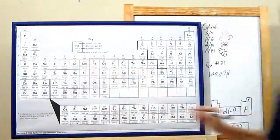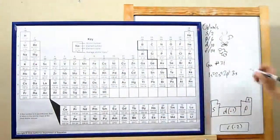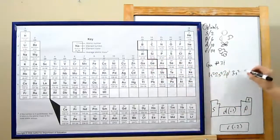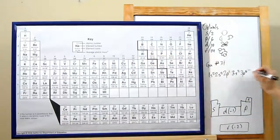Head down. Now we're in the third period. 3, s-block, 1, 2. Head over into the p-block. 3p, 1, 2, 3, 4, 5, 6.